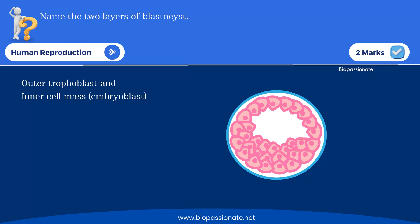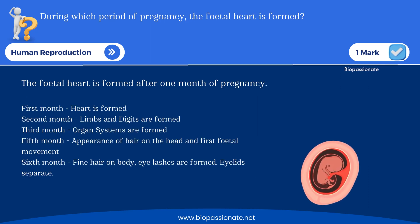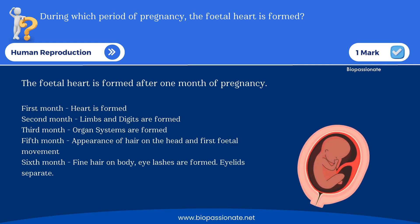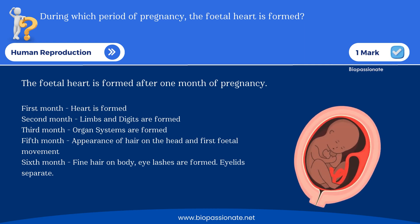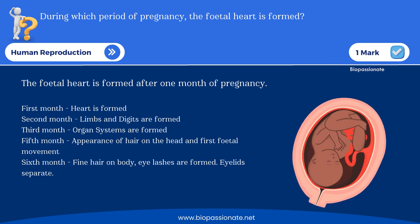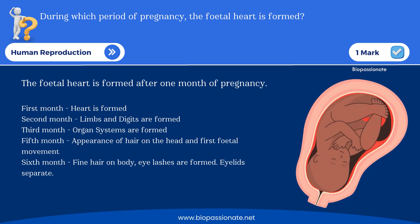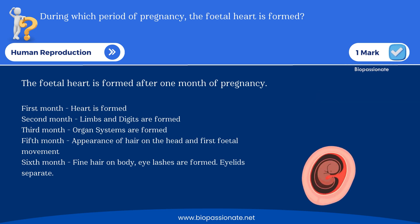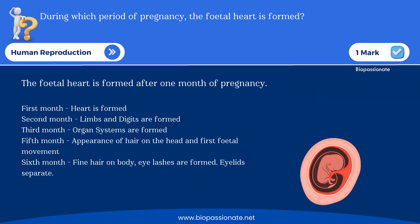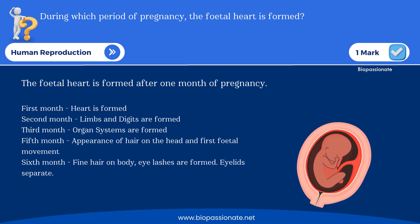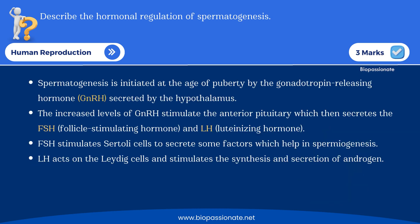During which period of pregnancy is the fetal heart formed? While studying embryonic development, you study changes in the fetus from the first month to nine months. Also important: describe the hormonal regulation of spermatogenesis for three marks. Remember gonadotropin releasing hormone (GnRH), follicle stimulating hormone (FSH), and luteinizing hormone (LH).